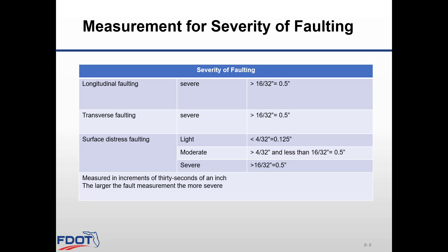Fault measurements are utilized to compute a fault index, Fi, which represents the average faulting for the rated section in thirty-seconds of an inch. Fault index is calculated by multiplying the fault measurement by 32 — for example, 0.25 times 32 equals 8, giving a fault index of 8 for a quarter-inch fault. Some of this information is summarized in the table from Standard Plans Index 353-001, Sheet 2 of 2.